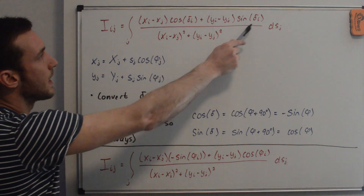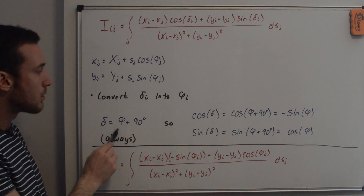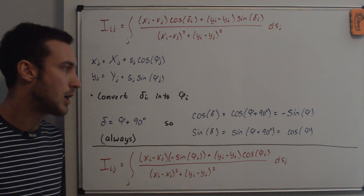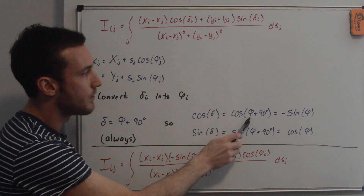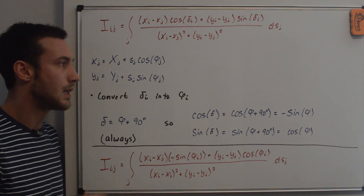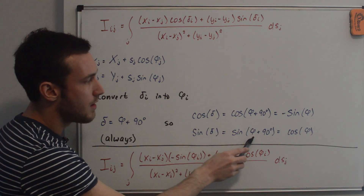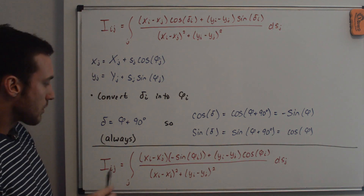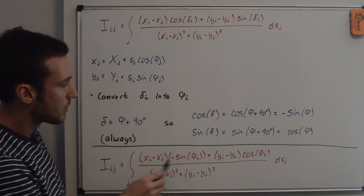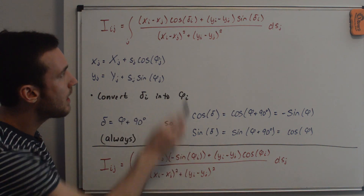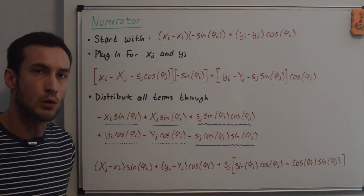The last thing before starting the integration is to convert the delta_i angles into phi_i angles. Since delta = phi + 90° always (from the panel method geometry video), we get cos(delta) = cos(phi + 90°) = -sin(phi), and sin(delta) = sin(phi + 90°) = cos(phi). The final expression has -sin(phi_i) substituted for cos(delta_i) and cos(phi_i) substituted for sin(delta_i).